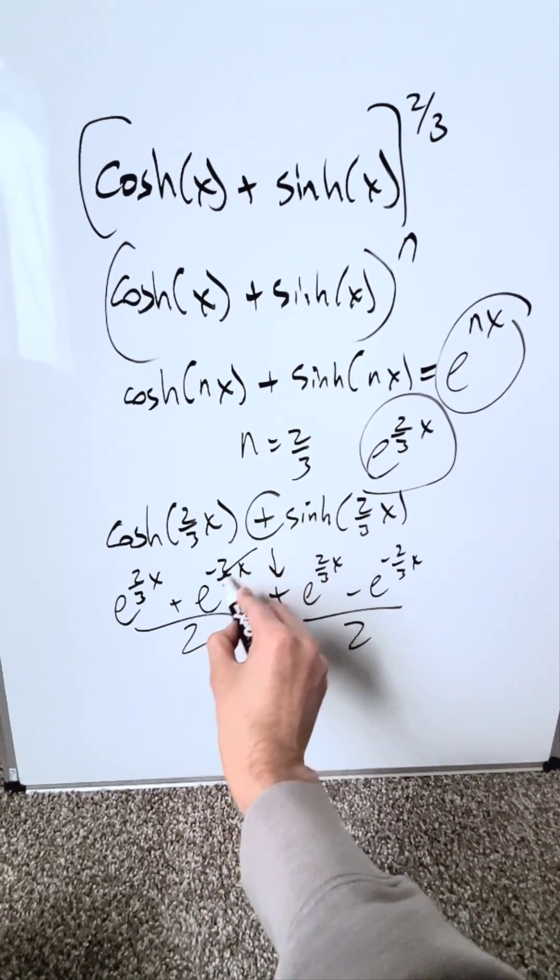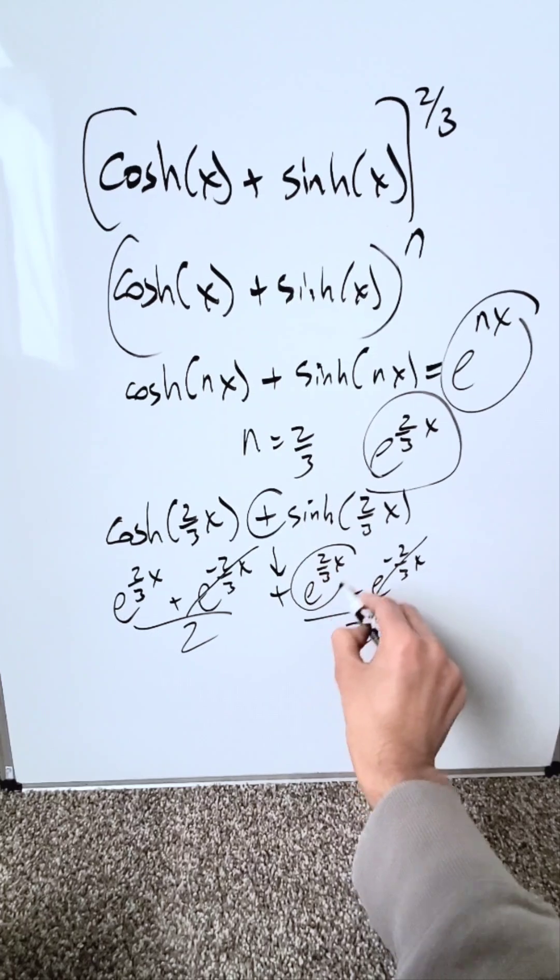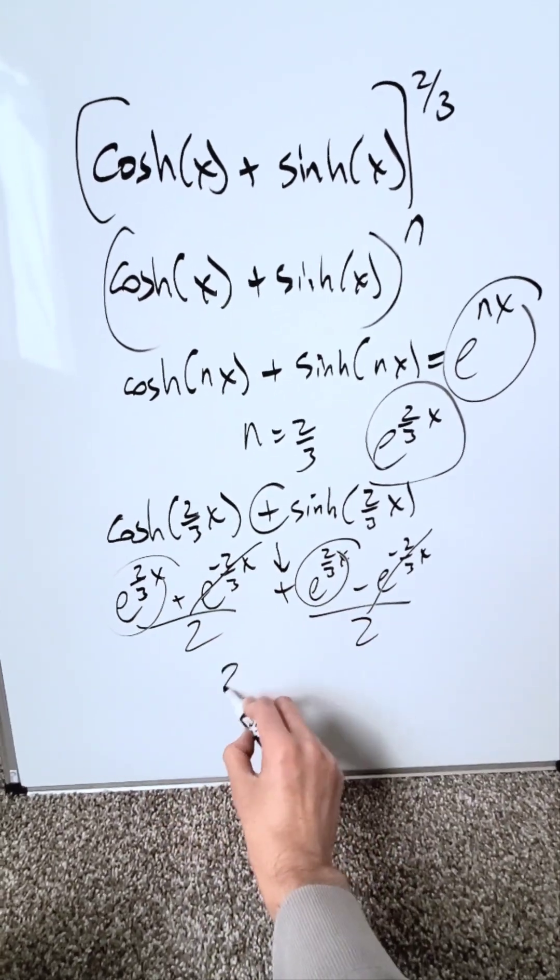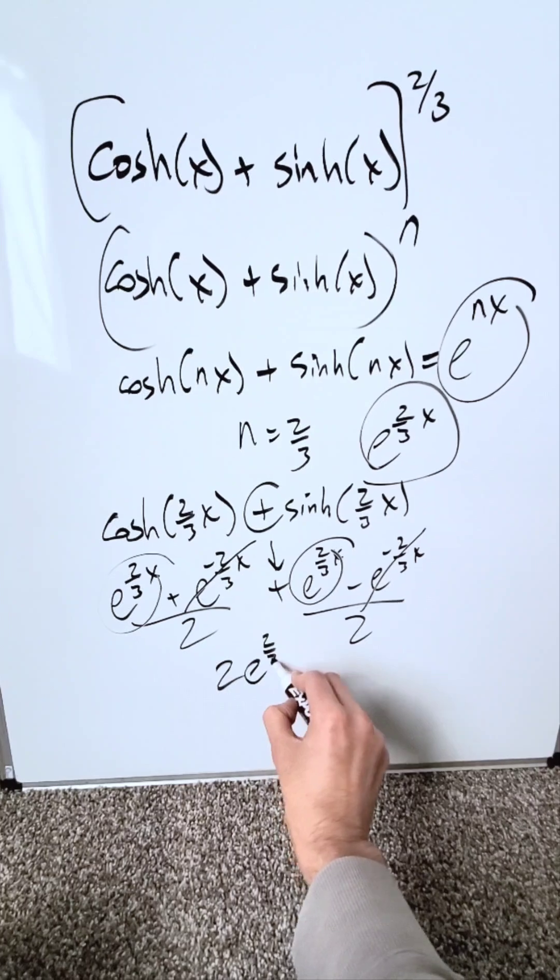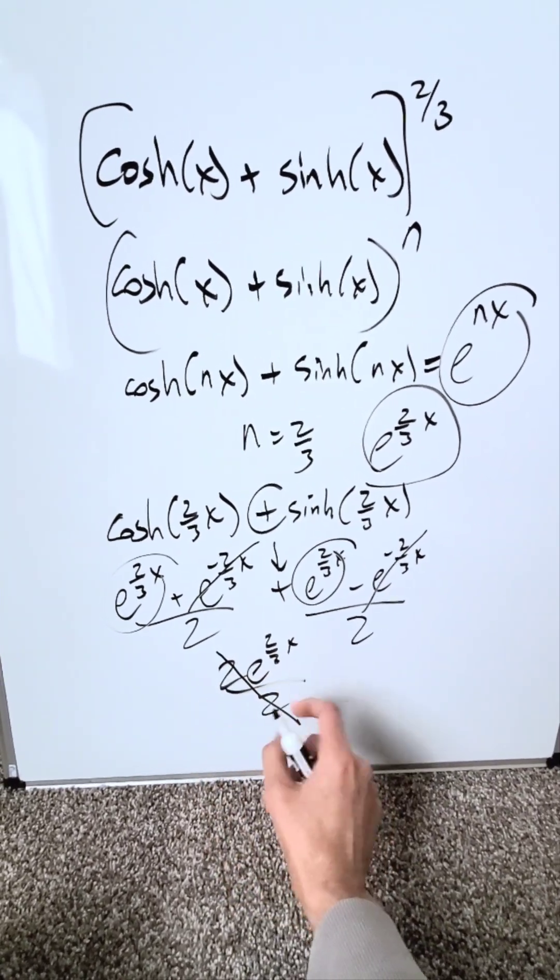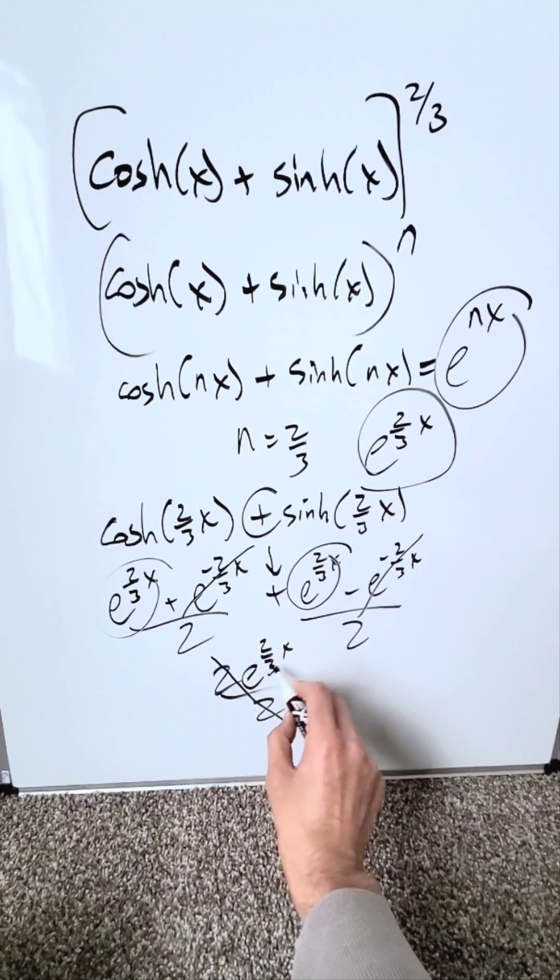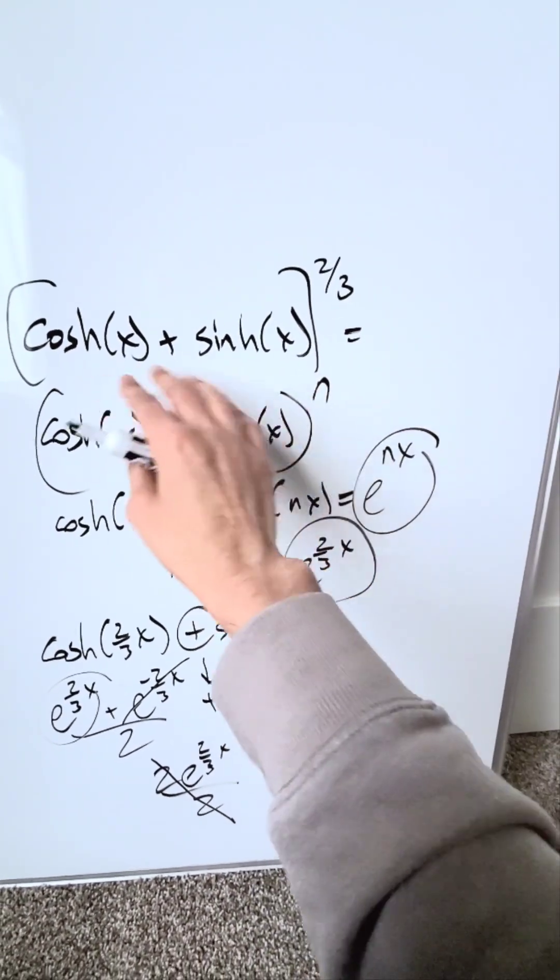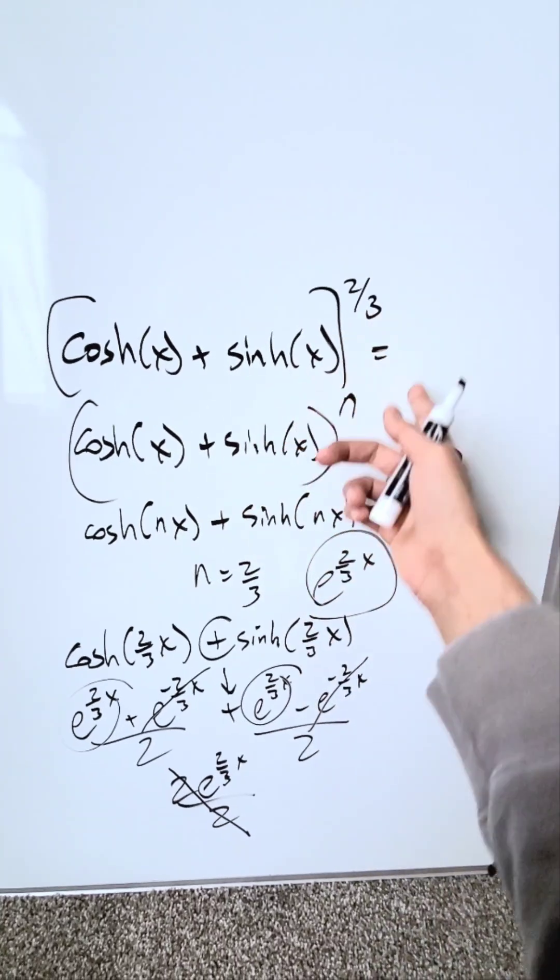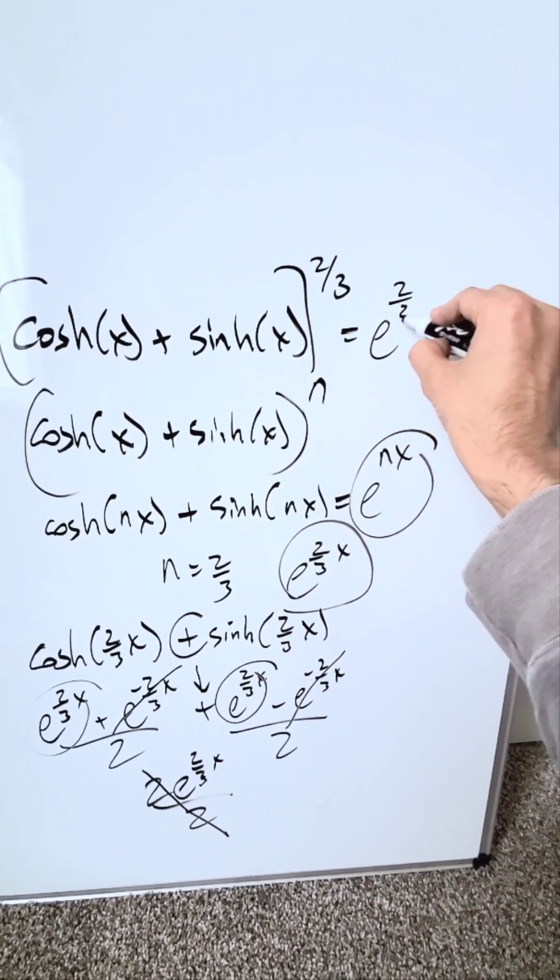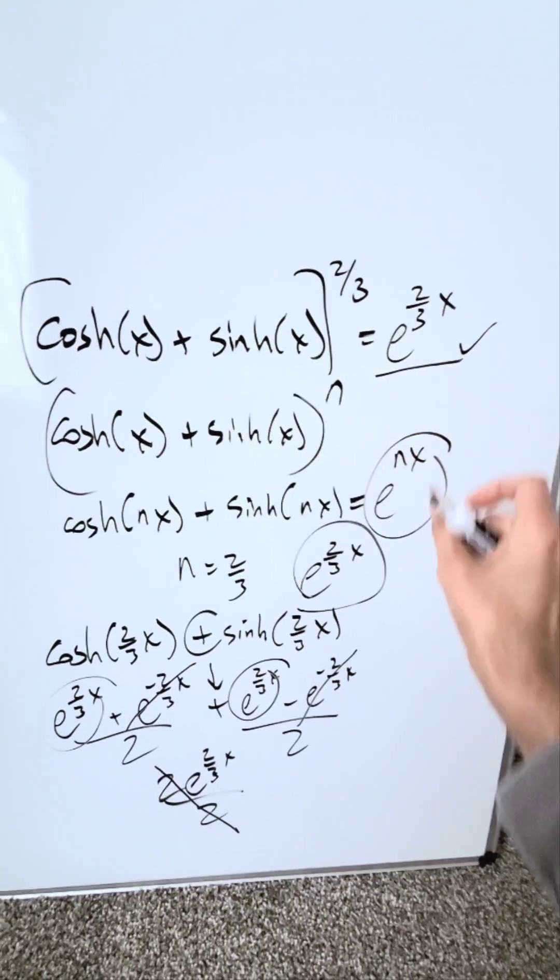Common denominator all the way across, these items will cancel. These two items will double because they're the same. E to the 2 over 3x plus the same is 2 e to the power of 2 over 3x over 2. Don't forget the denominator. When these cancel out, you're left with your end result. The evaluation is equal to e to the power of 2 over 3x and it will be correct.